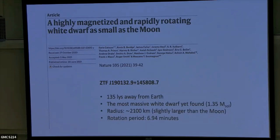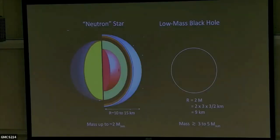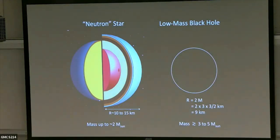Just recently in 2021, a paper published about a white dwarf found at the Zwicky Transient Facility. It's the most likely most massive white dwarf found so far — about 1.35 solar masses. If you make it even a bit more massive, gravity gets stronger and collapses it. The radius is about 2,000 kilometers — slightly larger than the Moon. It's an unusually massive and small white dwarf, and its rotation period is almost seven minutes, which is a very high rotation rate.